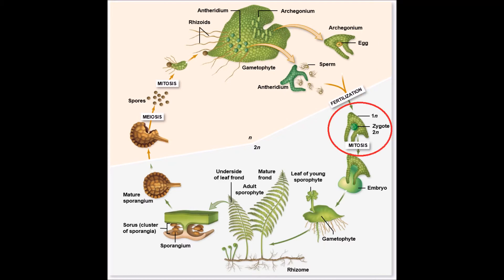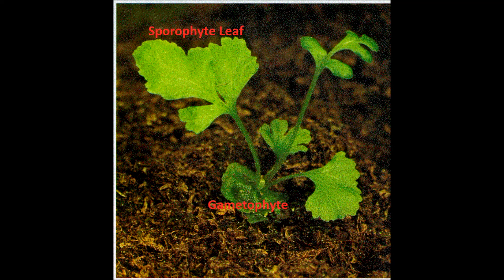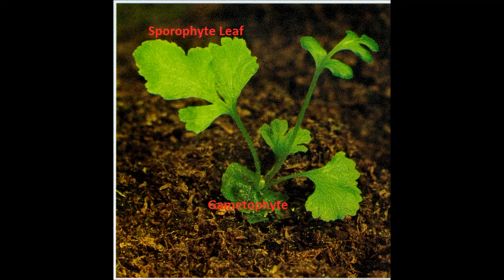These two haploid cells will create a diploid zygote, which will grow into a new sporophyte leaf, completing the alternation of generations.